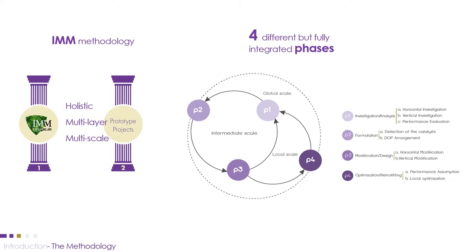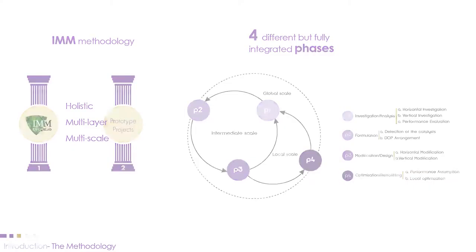IMM has four different but fully integrated phases. In phase one, we did horizontal and vertical investigation, followed by performance evaluation. In phase two, we identified the weakest catalysts and arranged the design authoring principles. In the third phase, we do the intervention on both city and local scale. Lastly, we did the retrofitting.